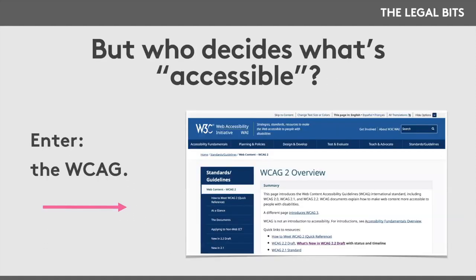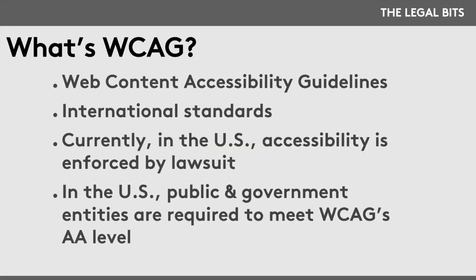But who decides what is accessible? Enter the Web Accessibility Initiative, a group that produced an international set of standards called the Web Content Accessibility Guidelines, currently on version 2.1, with 2.2 expected any day. Many countries use WCAG as law, including New Zealand, Hong Kong, and India. Others like France, Portugal, and Japan use WCAG as the basis for creating their own accessibility laws. In the United States, accessibility is only enforced by lawsuit — no one can stop you from creating inaccessible websites unless they decide to sue you.